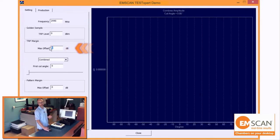We're going to set a TRP margin. This means that we're going to allow up to 0.5 dB of variation in TRP before the test will fail.